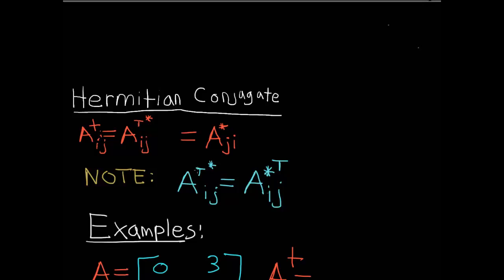It doesn't matter which way you do it, it just matters that you do both of them. As you can see here, what a transpose does is it switches the ij-th component to ji, and then you take the conjugate there.